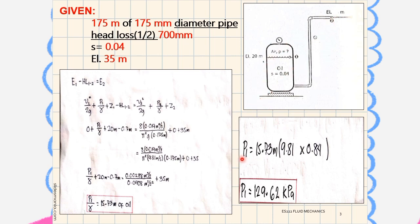So P1 equals 15.73 meters times 9.81, which is gravity, times 0.84. So P1 equals 129.62 kilopascals.